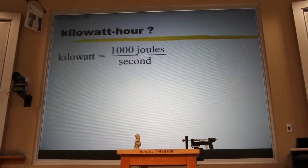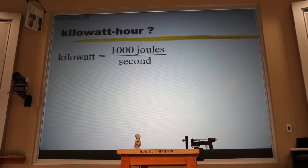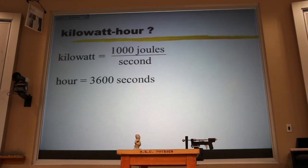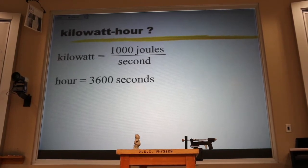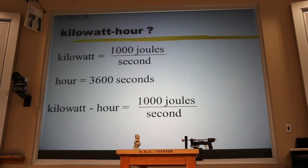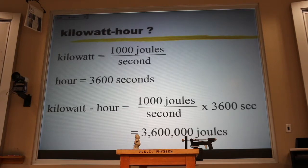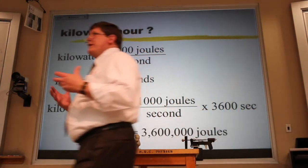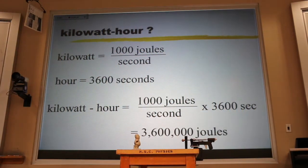A kilowatt is 1,000 joules per second. 1,000 watts. And an hour is 3,600 seconds. It seems a little longer in a physics class, but that's all it is, 3,600 seconds. If I multiply those out, I get 1,000 joules per second times 3,600 seconds. The seconds cancel, and I get 3.6 million joules. When we call it the power company, it's a misnomer. We're not buying power from the power company. We're buying energy. It should be called the energy company.